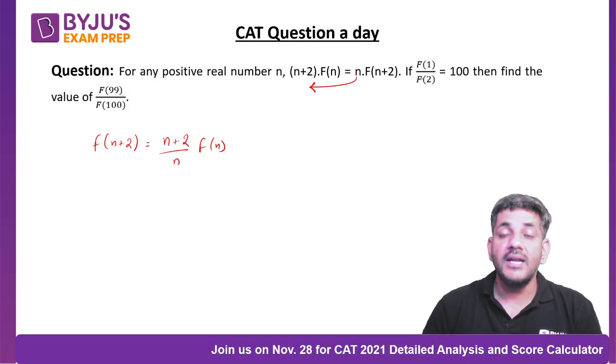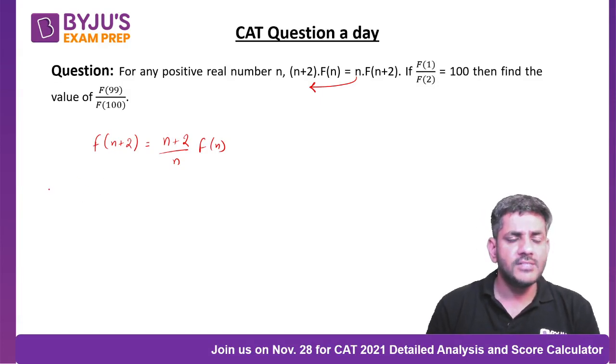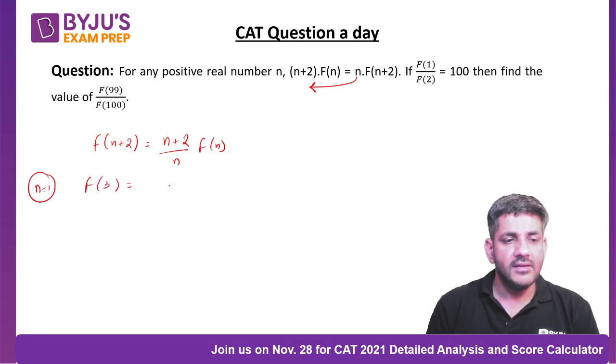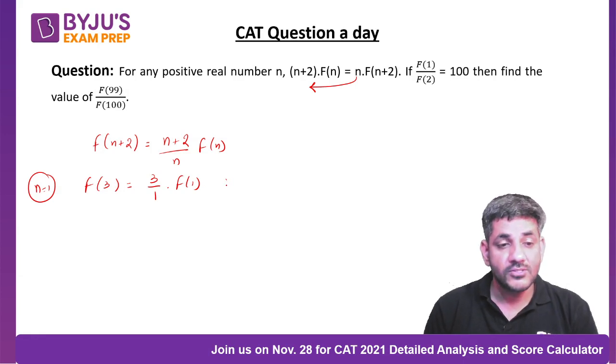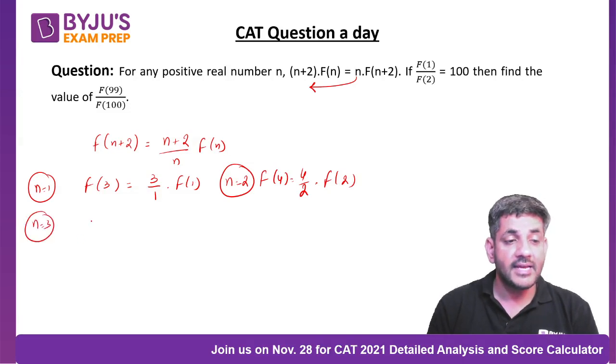Now f(1) divided by f(2) is given, that means there is something about 1 and 2 that we have to use. I am putting n equals 1 first. If I put n equals 1, I get f(3) equals 3/1 times f(1). Now if I put n equals 2, I get f(4) equals 4/2 times f(2).